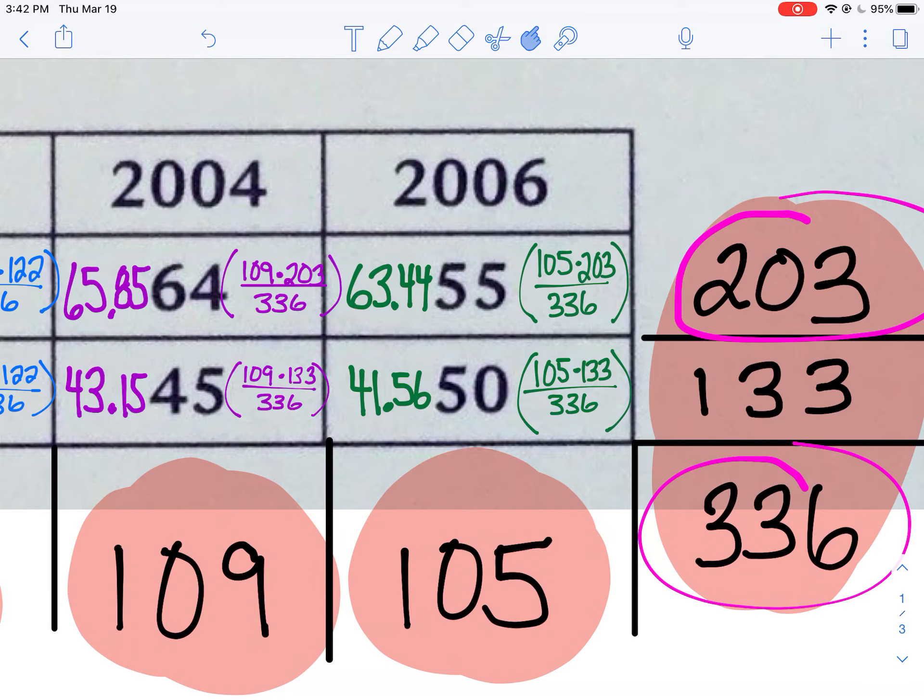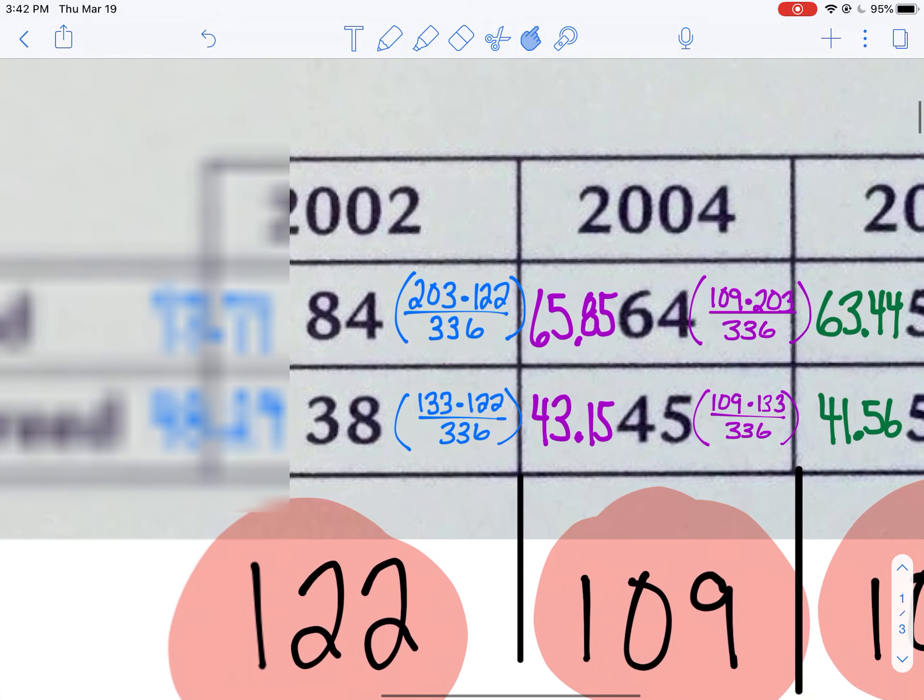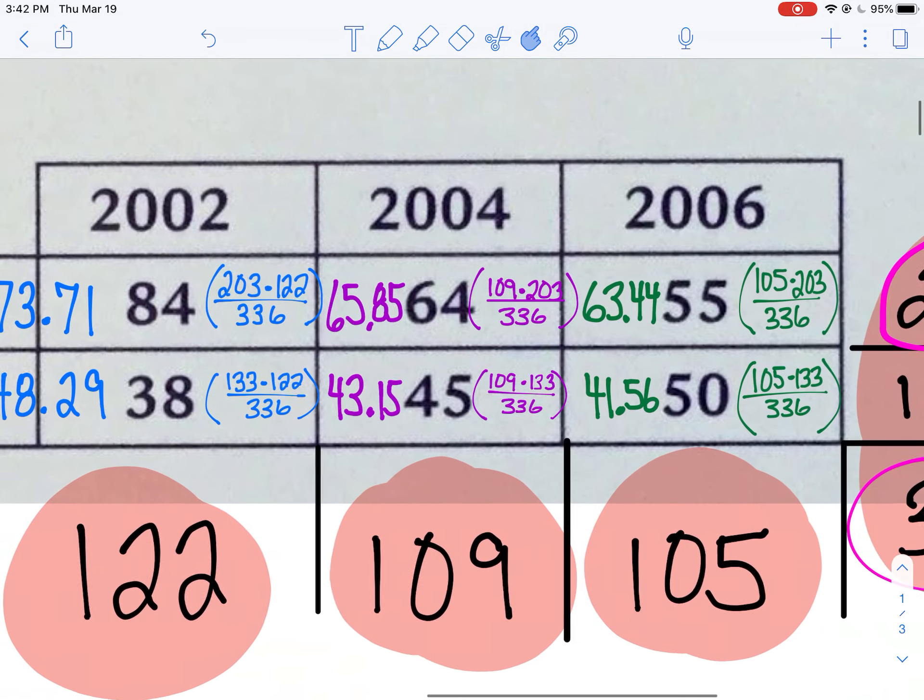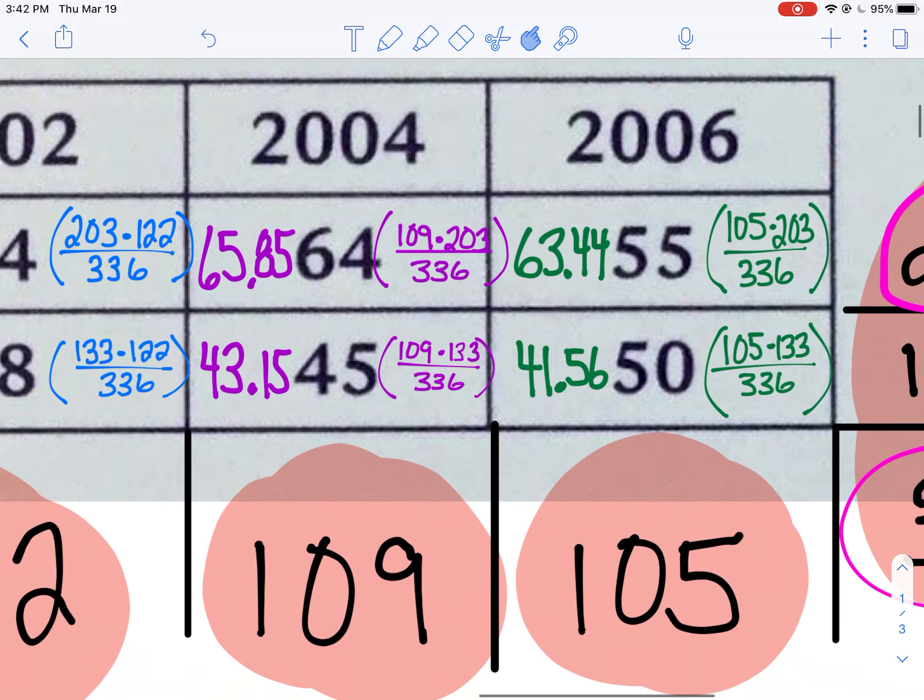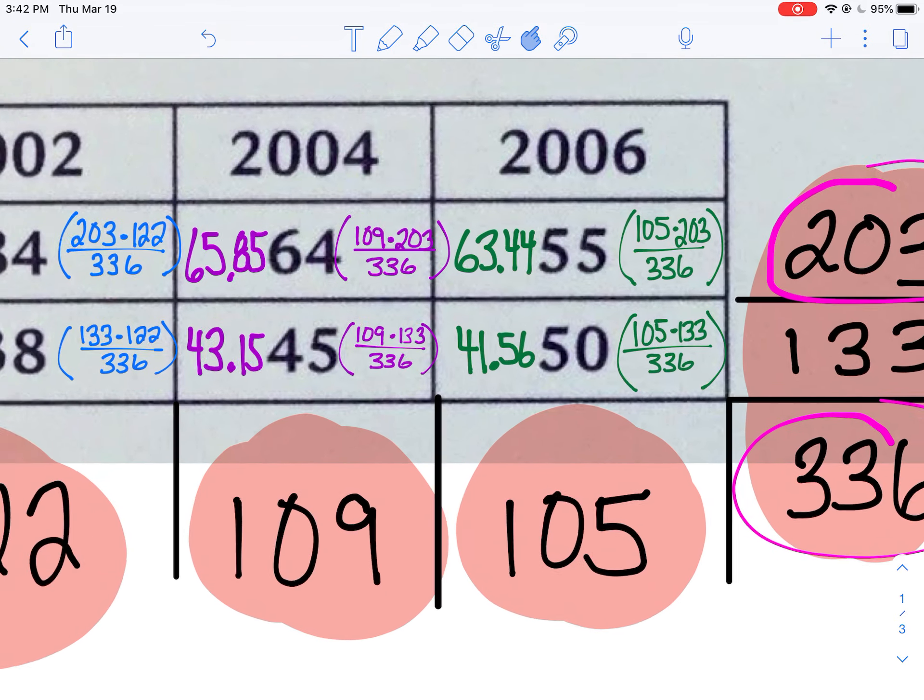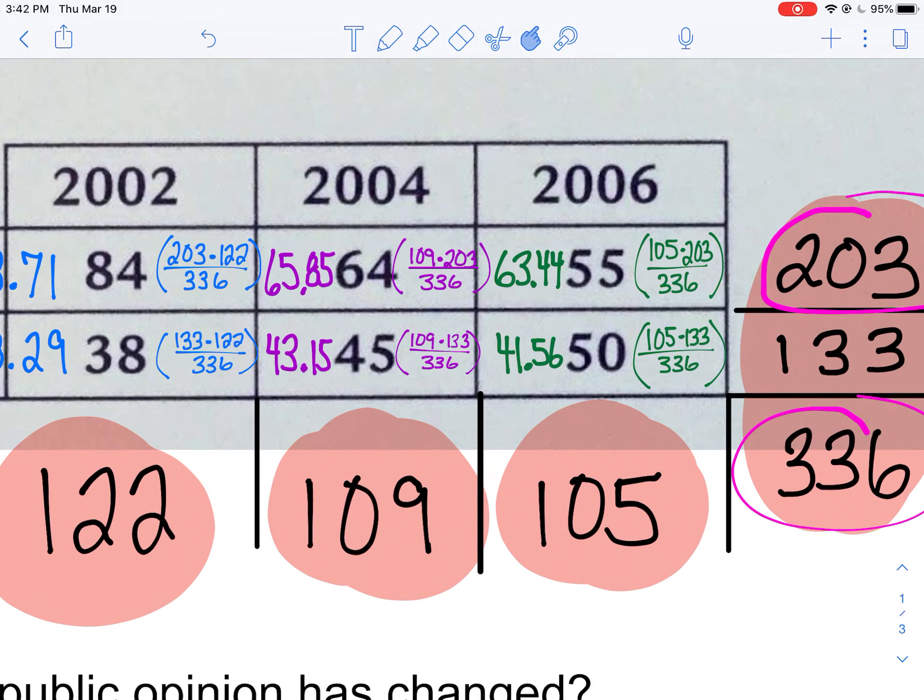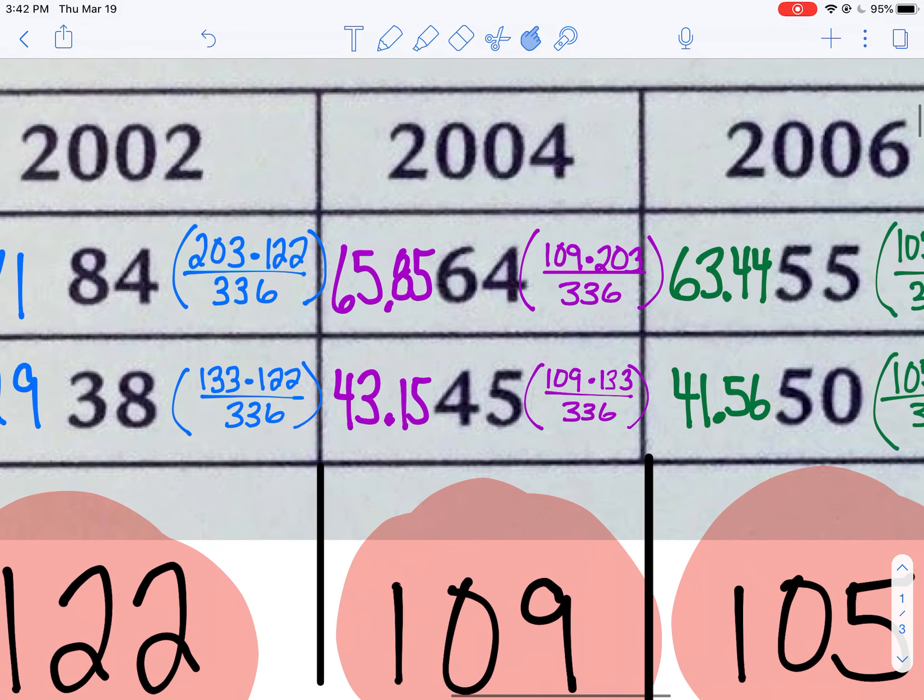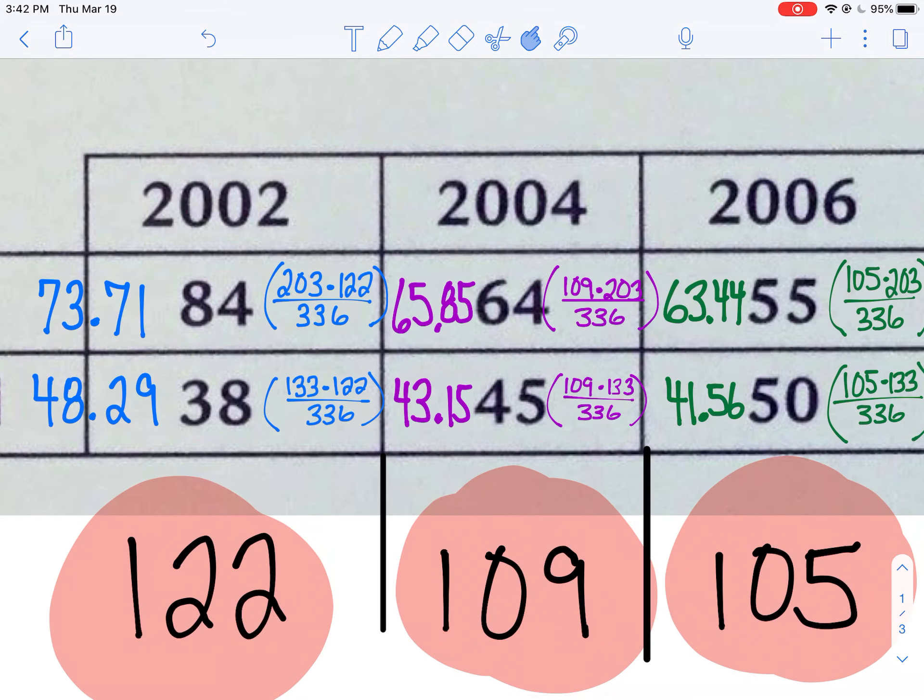When I went down to here, you'll notice 133 I used for all of these. That's my row times my column. 133 times 122, 133 times 109, 105 times 133. And each time I divided by my total of 336. And I got all my expected counts here. As you can see, they are all greater than or equal to 5. So I've met that condition. I am ready to proceed.